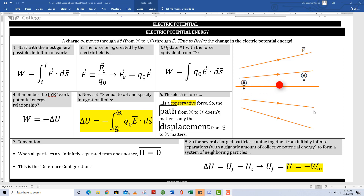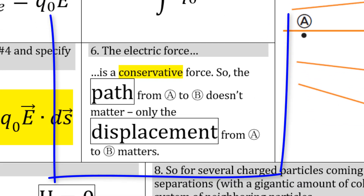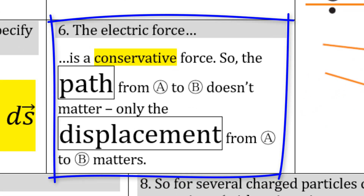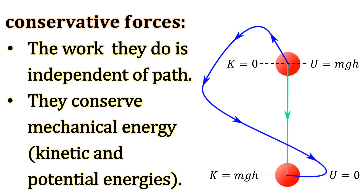Imagine Probert starting at point A and moving to point B. One key point is the work done by the electric force is path independent. This means that the electric force itself is a conservative force. Only the displacement matters, not the path. The work done by a conservative force is independent of path, and a conservative force always conserves mechanical energy, which is the sum of kinetic and potential energies.